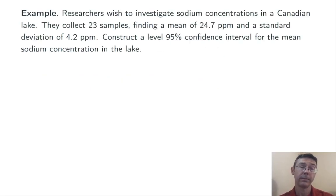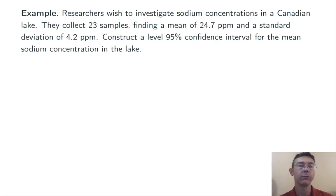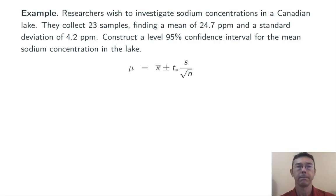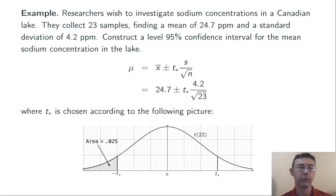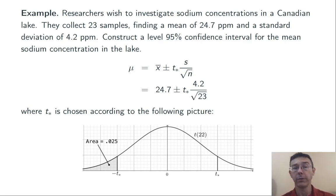Let's see a full example. Researchers wish to investigate sodium concentrations in a Canadian lake. They collect 23 samples, finding a mean of 24.7 parts per million and a sample standard deviation of 4.2 parts per million. Construct a 95% confidence interval for the mean sodium concentration in the lake. Since we don't know the population standard deviation, we'll use the t-distribution formula. We can immediately plug in x-bar = 24.7, s = 4.2, and n = 23.